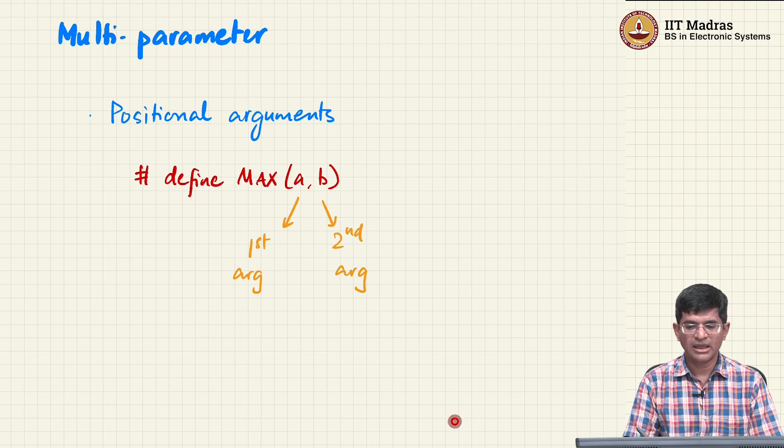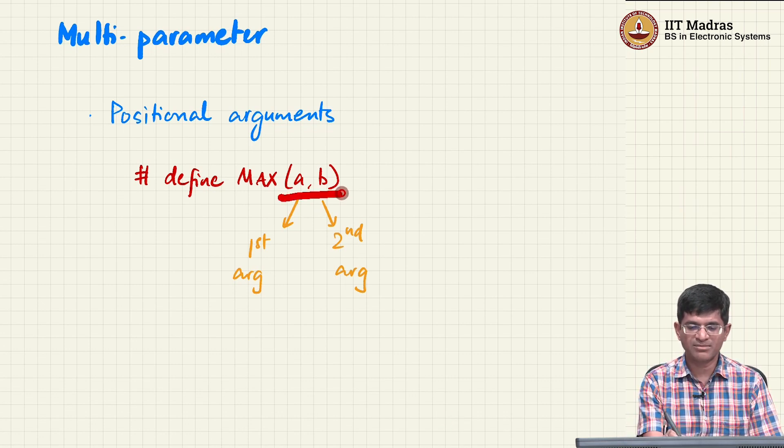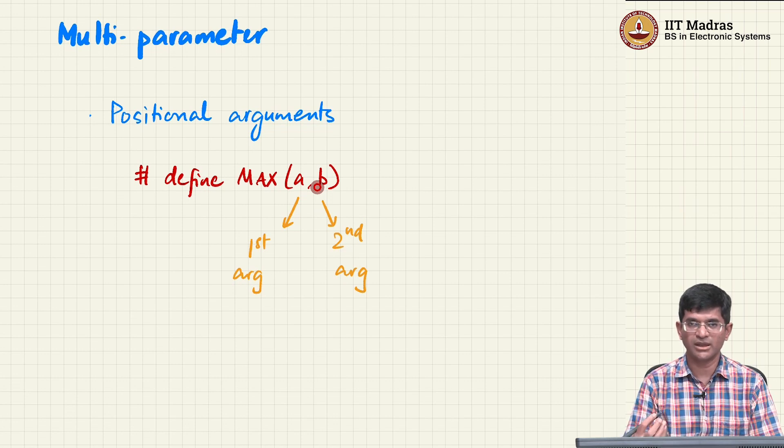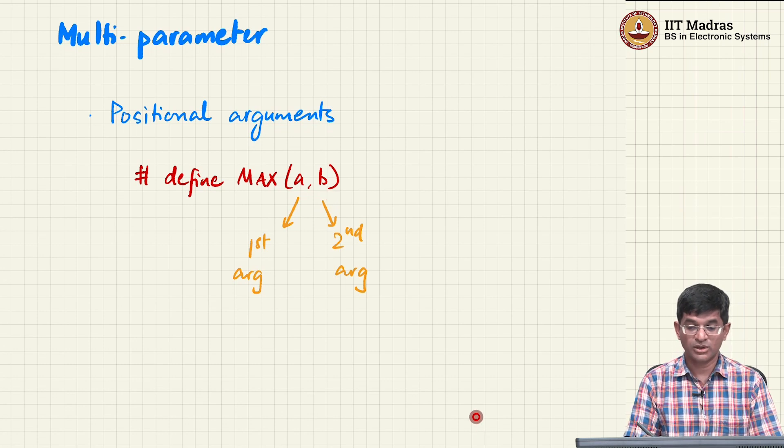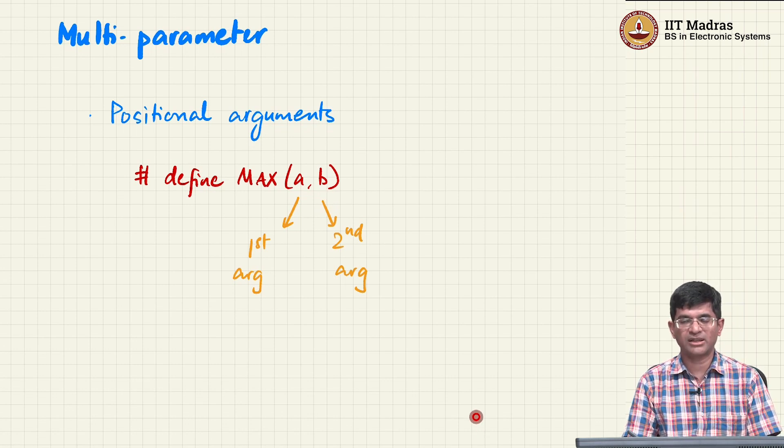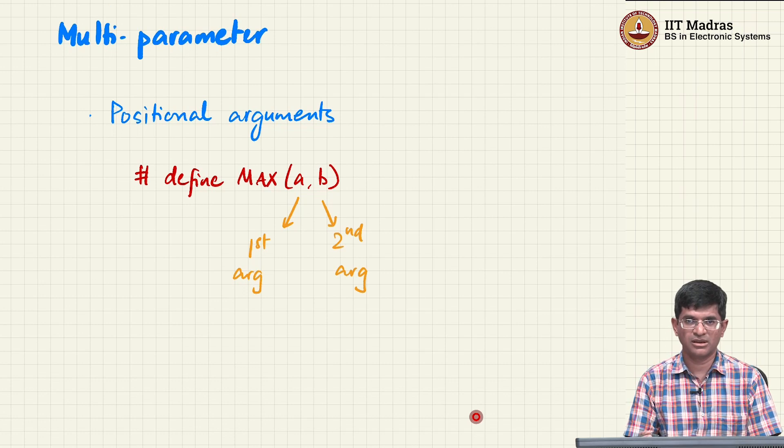You can also have multi-parameter macros where you can essentially say max of, just like a function definition you can use this notation. This is actually something very specific in the sense that whenever it sees parentheses, the macro expansion treats whatever is inside the parentheses as a separate word or a string to be substituted, and it handles each of those as comma separated values that need to be substituted individually. This actually makes it possible to define even macros that handle multiple parameters.